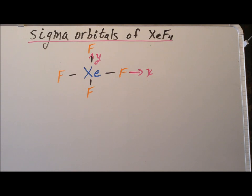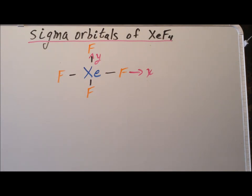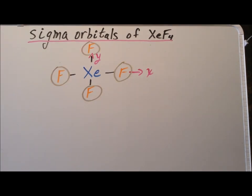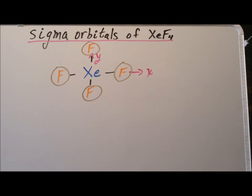It is common practice to arrange planar molecules in the XY plane, so here we've labeled the X axis and the Y axis, with the Z axis being perpendicular to the plane of the whiteboard. The first step in our derivation is to find the allowed linear combination of atomic orbitals on fluorine which have the proper symmetry to interact with atomic orbitals on the central xenon atom. By convention and for simplicity, we tend to represent these sigma orbitals using circles, which is typical for S orbitals.